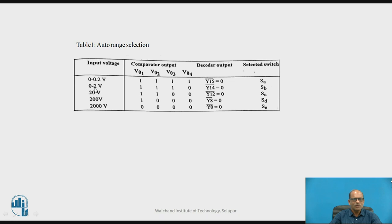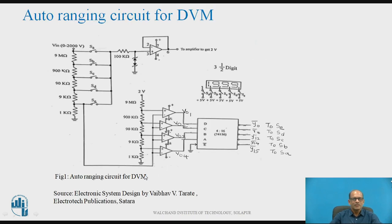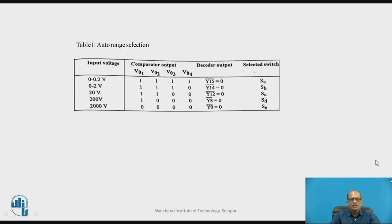Whenever the input voltage is between 0 and 2V, VO1, VO2, and VO3 are high and VO4 is low. Looking at the circuit, when the input is between 0 and 2V, VO1, VO2, VO3 are logic 1 and VO4 is low — the binary input to the decoder is 1, 1, 1, 0. Therefore Y14 is selected, Y14 goes low, and it controls switch SB.